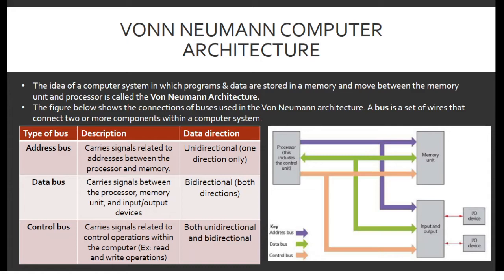The Von Neumann architecture is the idea of a computer system in which programs and data are stored in memory and moved between the memory and processor. The figure below shows the connections of buses used in the Von Neumann architecture. A bus is a set of wires that connect two or more components within a computer system. The Von Neumann architecture makes use of three buses.